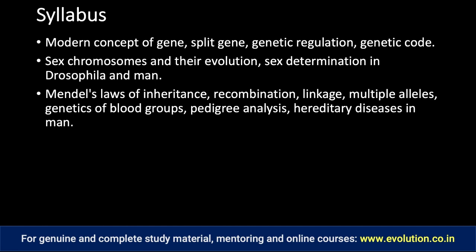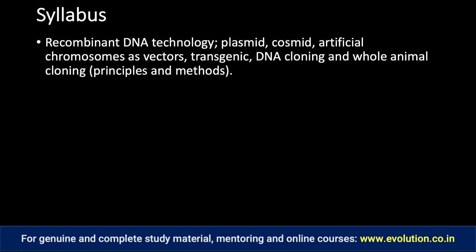Multiple alleles should ideally be studied immediately after Mendel's laws of inheritance, and genetics of blood groups should come just after multiple alleles. These are some of the inconsistencies because of which we need to restructure the syllabus. The next topic is mutations and mutagenesis, but then the next syllabus topic jumps to an applied topic — recombinant DNA technology, gene cloning, whole animal cloning and different types of vectors. This should have come only after completing the molecular genetics.